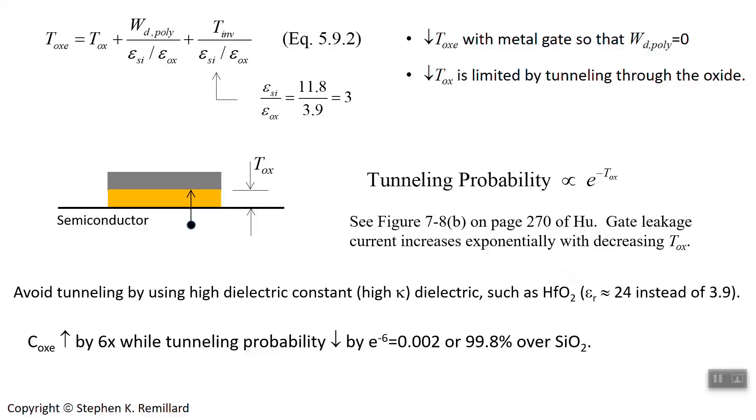Consequently, you can increase the capacitance while essentially having no tunneling. If you increase this exponential by a factor of 6, it becomes quite negligible. You can get rid of your tunneling quite easily that way. It goes to 0.2% by changing to hafnia and increasing the thickness to keep the same capacitance.